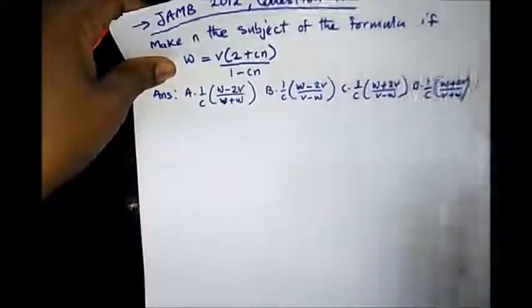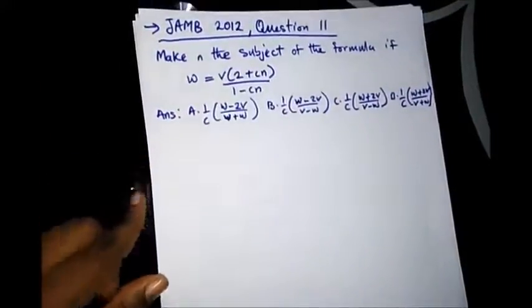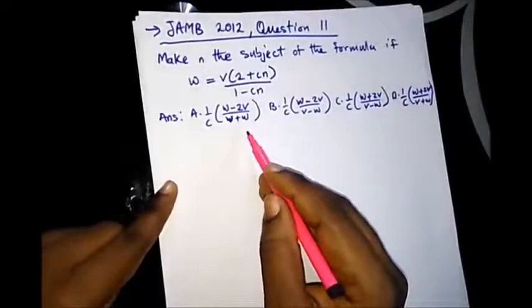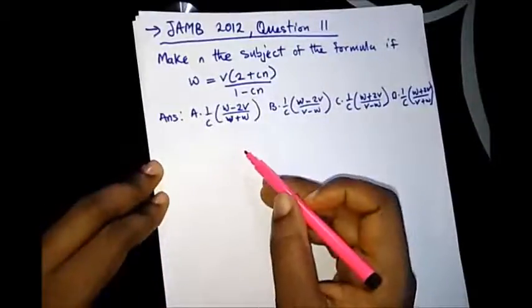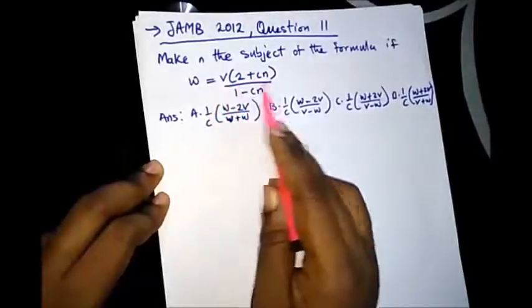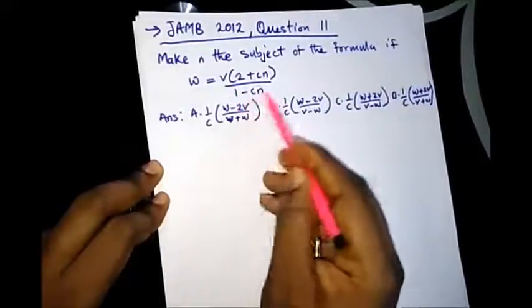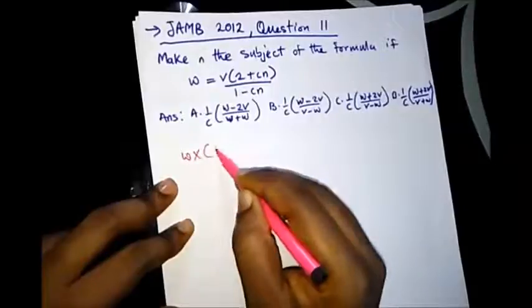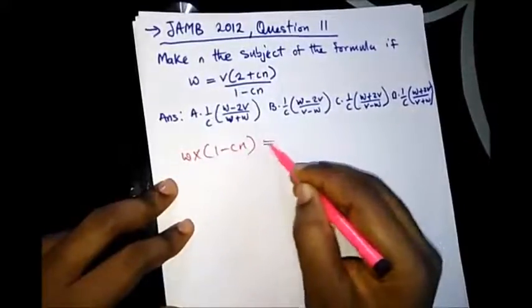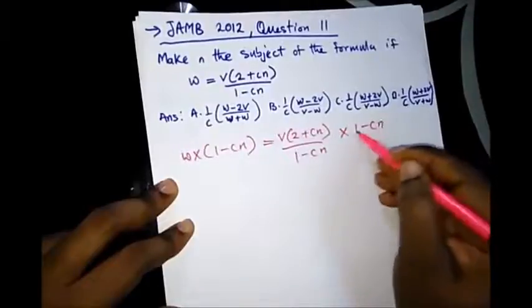Let's go to our next question. This is from JAMB 2012 question 11. This will still help us to further understand the change of subject of the formula. It says: make N the subject of the formula if W is equal to V bracket 2 plus CN over 1 minus CN. Let's multiply both sides by 1 minus CN to remove the denominator.